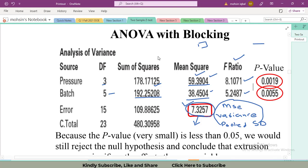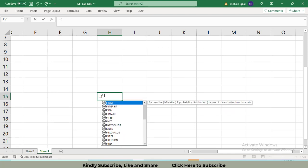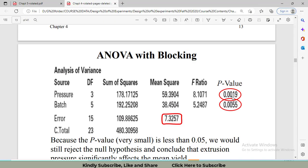In Excel, you will have to insert equals F dot DIST dot RT. X means my F statistic value that is 8.10. Then insert comma. After that degree of freedom 1, the numerator degree of freedom, equals 3, then comma again degree of freedom 2 for denominator. Close bracket, press enter, and you will get 0.00192.